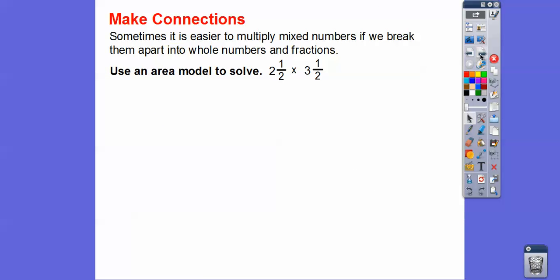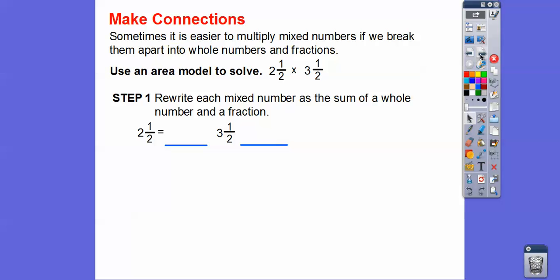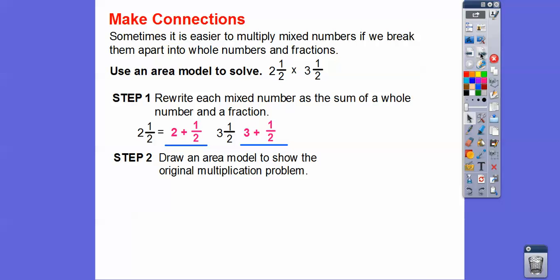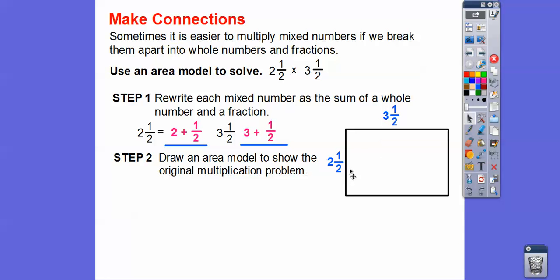We'll do another one like that at the end of this lesson, but let me show you a different way. Sometimes it's easier to multiply mixed numbers if we break them apart into whole numbers and fractions. We'll use an area model to solve 2½ times 3½ — we already know it's 8 and ¾, but let's do it this way. Write 2½ as 2 plus ½, and 3½ as 3 plus ½, then draw an area model to show the original multiplication problem.